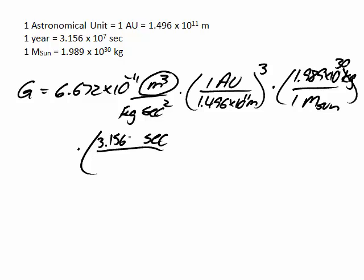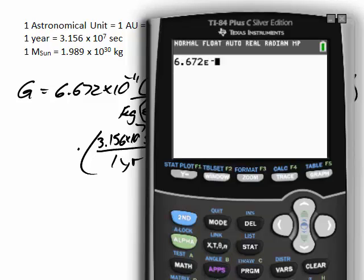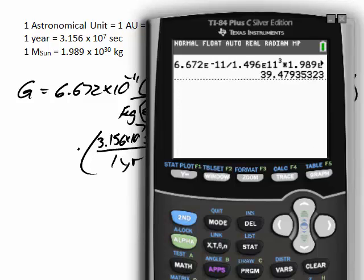3.156 times 10 to the 7 seconds is 1 year, and we're going to square that. 1 squared is still 1, and we had to do that because we had seconds squared here. So, when we punch that into a calculator, we get 39.48.